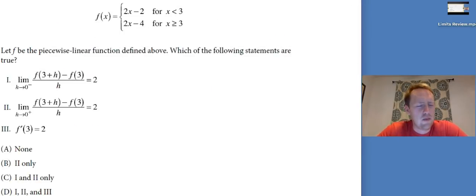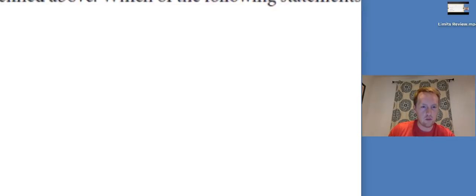This one's kind of, it looks like a limit problem, but that's the limit definition of the derivative they're trying to get you to see, so I included it here. Let F be the piecewise linear function defined above which of the following statements are true. First, limit as H goes to 0 from the left of F of 3 plus H minus F of 3 over H is equal to 2. So keep in mind that the function is 2X minus 2 for values less than 3 and 2X minus 4 for values greater than or equal to 3.